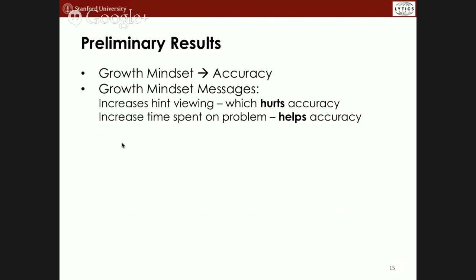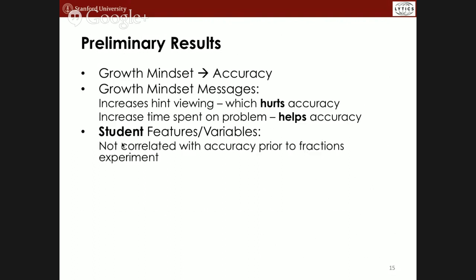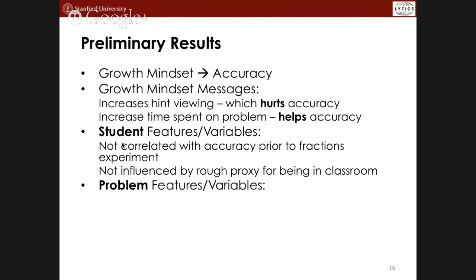How does the experimental condition interact with student features? It's not correlated with prior accuracy — a proxy for students' prior knowledge or engagement. And it's not influenced by whether they're in a class or have a coach on Khan Academy. Looking at problem features, the effect of mindset messages is larger for earlier items than later items, so it decreases over time.